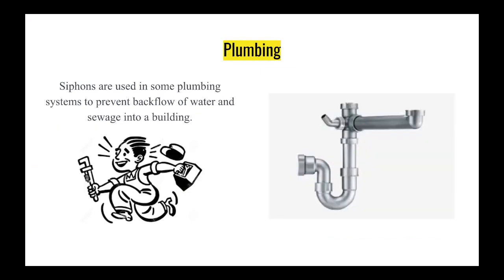In plumbing, a siphon is used to prevent sewer gases from entering a building by maintaining a water barrier in the plumbing system. This type of siphon is known as a trap and is typically located underneath sinks, toilets, and other plumbing fixtures.